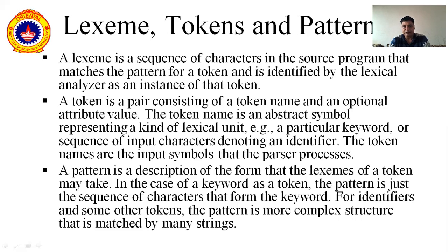Similarly, a token is a pair consisting of a token name and an optional attribute value. Once you find the Lexeme, after that, if we provide some attribute to it, then it will become a token. Attributes are a kind of additional information — like it is a keyword, it is an identifier, or it is a constant. So when we combine a Lexeme with some attribute, it will form a token. Sometimes they both can be used interchangeably.